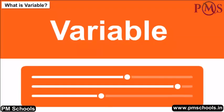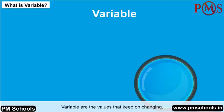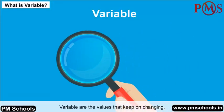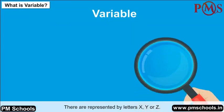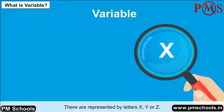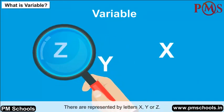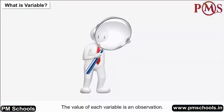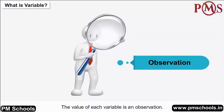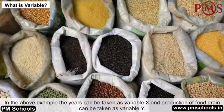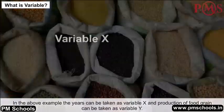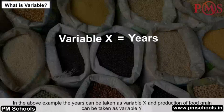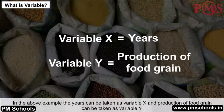What is a variable? Variables are the values that keep on changing. These are represented by letters X, Y, or Z. The value of each variable is an observation. In the above example, the years can be taken as variable X and production of food grain can be taken as variable Y.